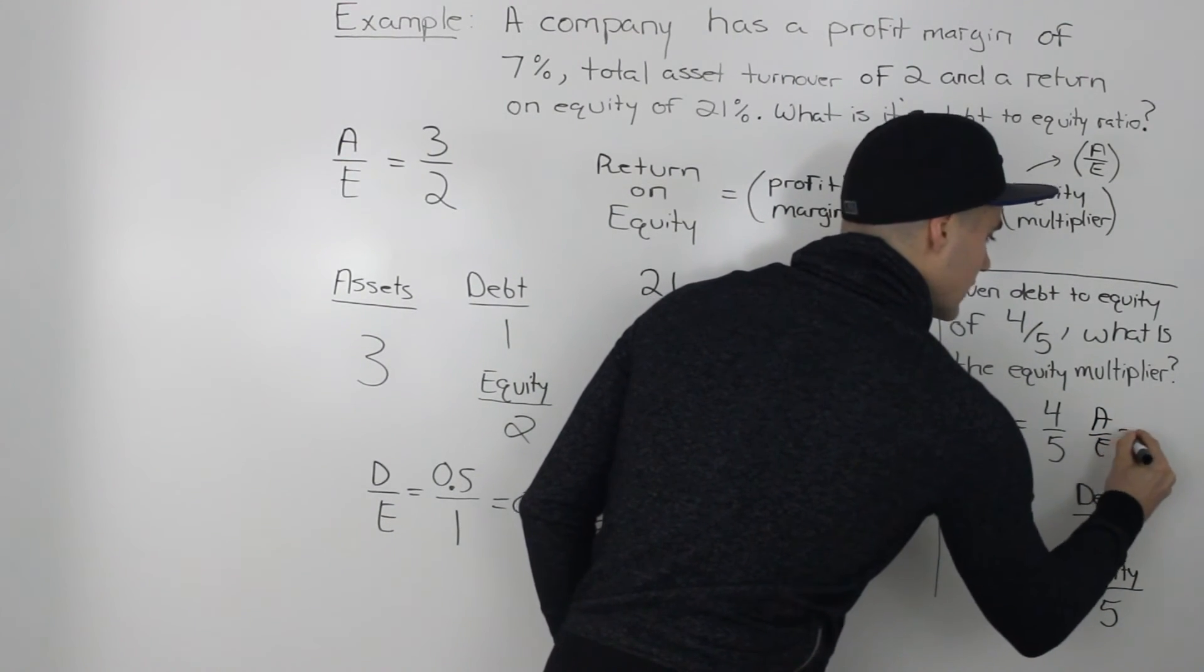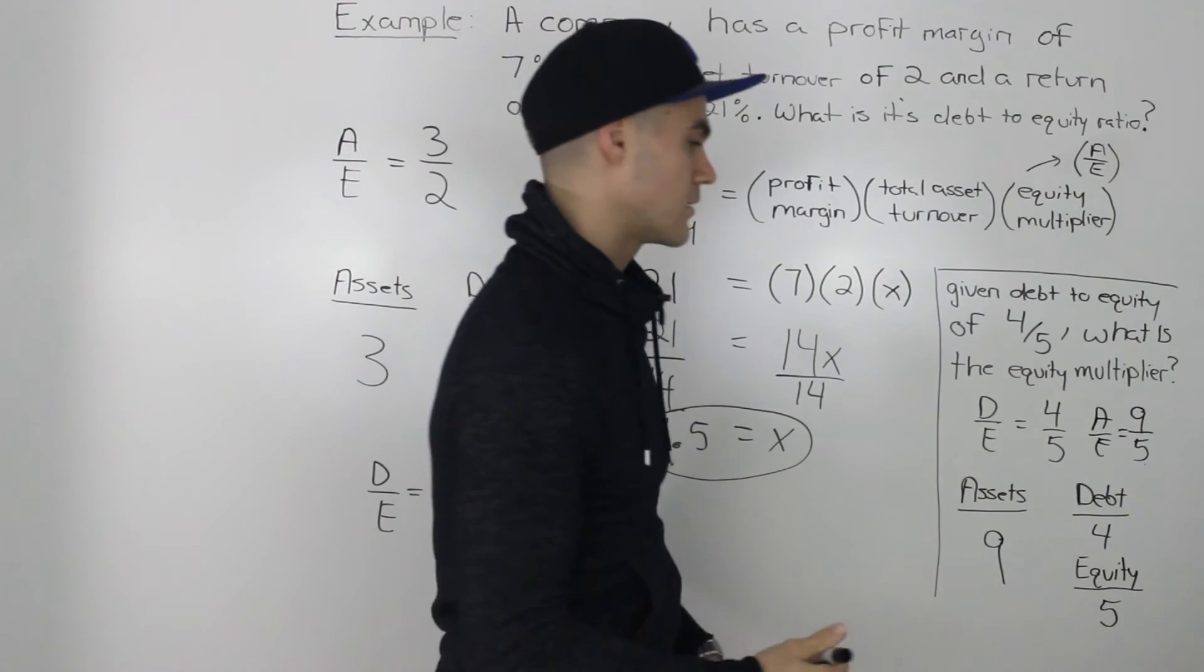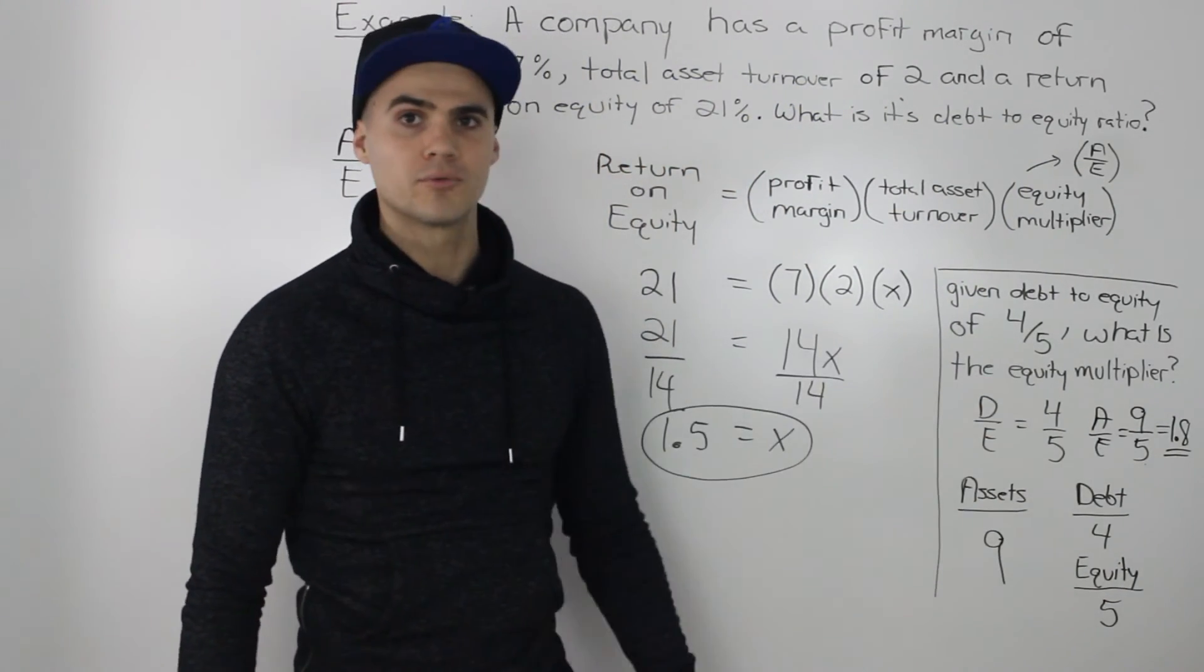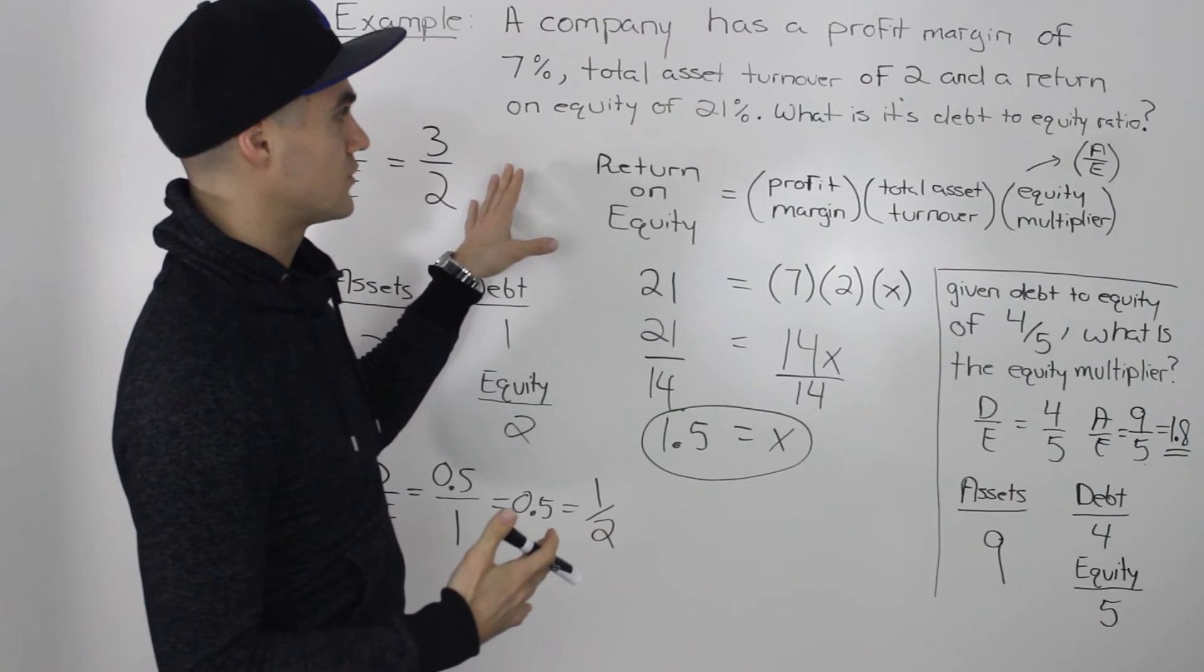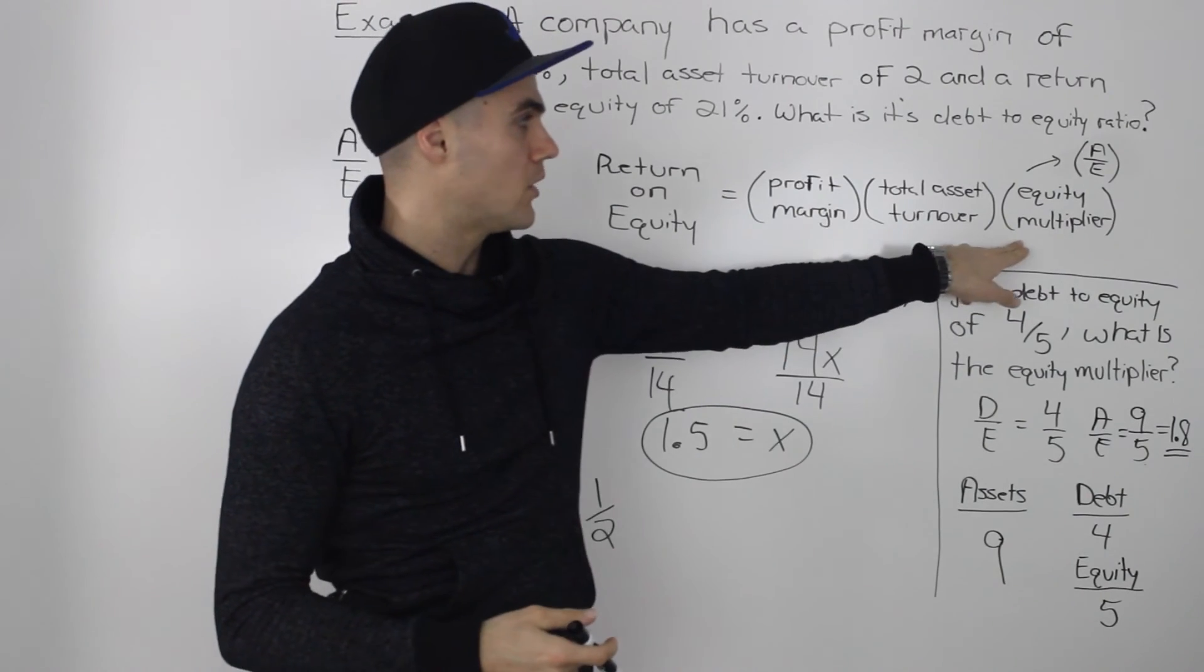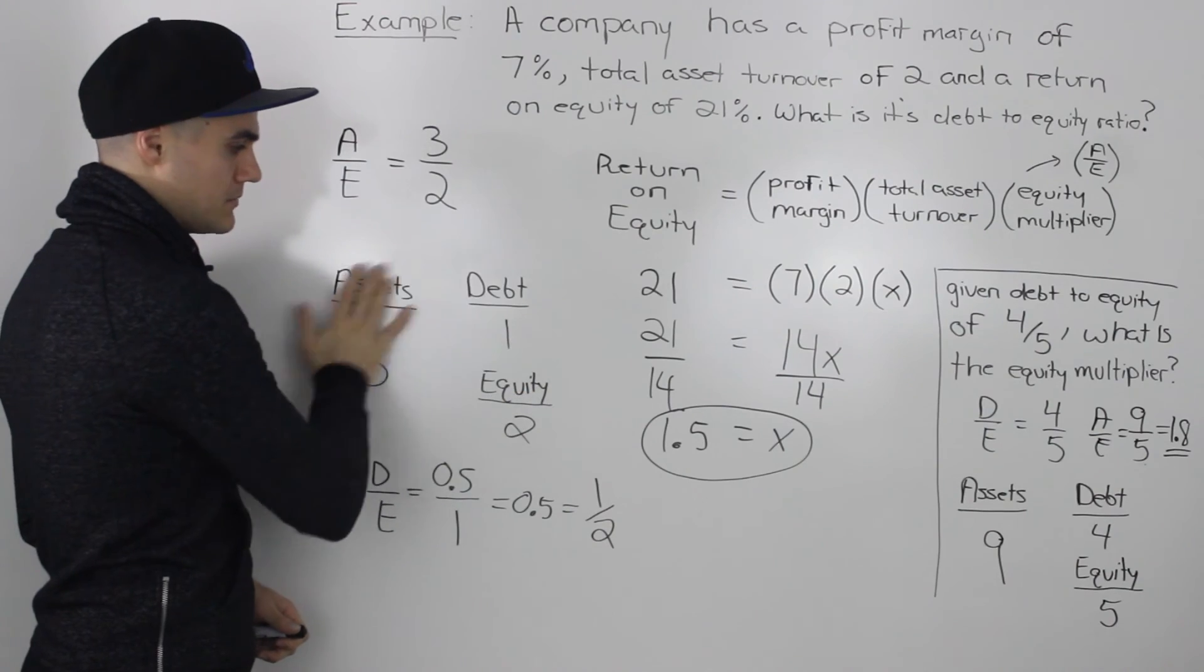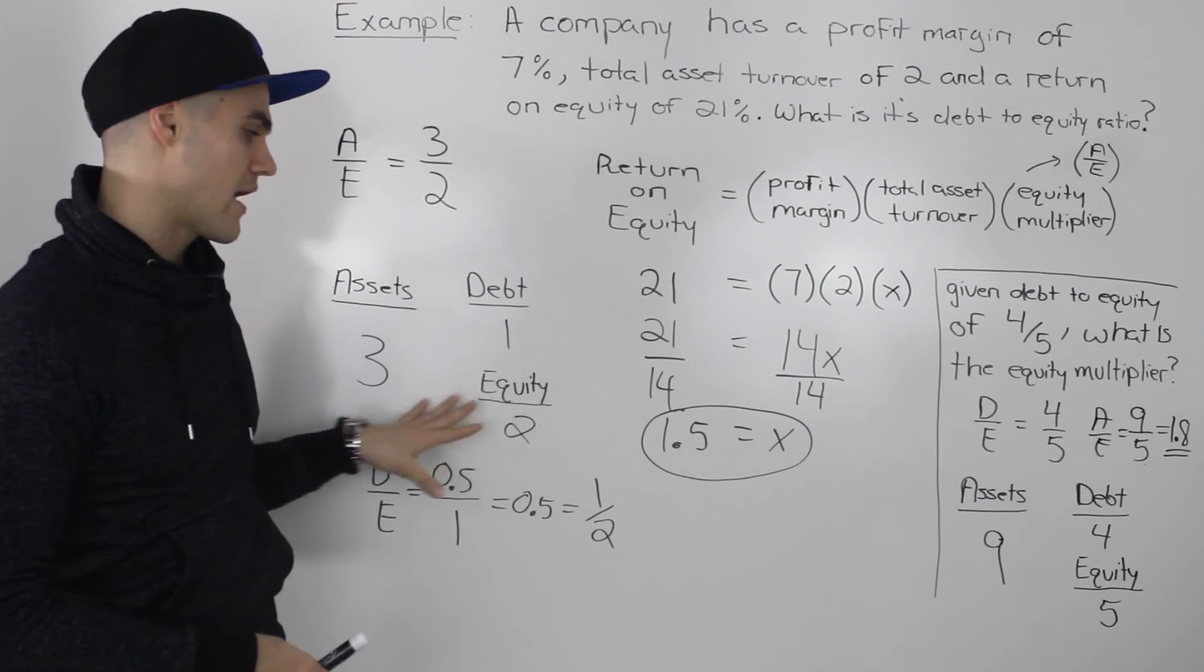The equity multiplier is just equal to assets over equity. So we know that it's equal to 9 over 5, which in decimals is 1.8. So overall, not too bad of a question. The first trick in this question is recognizing that you can use the DuPont identity with the information that you're given. You can use the DuPont identity to find the equity multiplier. And then the second part, probably most important, is knowing how to manipulate the equity multiplier, put it in a mini balance sheet, and then be able to find your debt to equity ratio, which is what you're asked for, from that balance sheet.